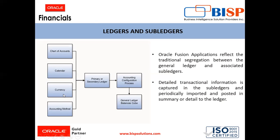If you look at the diagram presented on the screen, the chart of accounts, calendar, currencies and the accounting method are mapped with the primary ledger or the secondary ledger to enable the accounting configuration processes, and then the general ledger balance cubes, which are used for reporting purposes, are created.